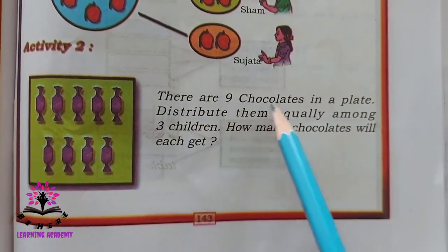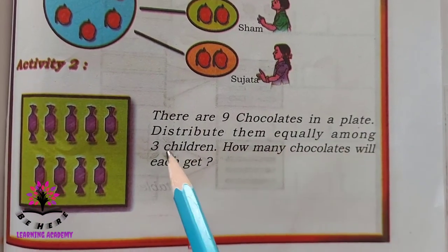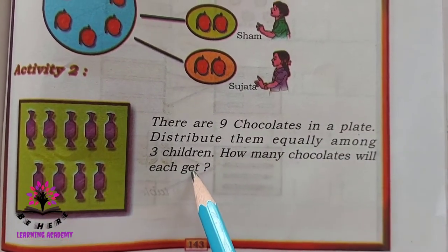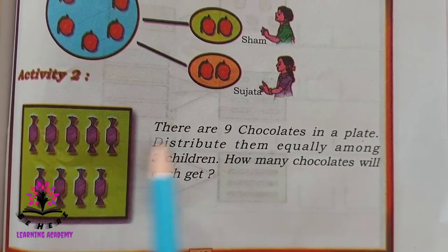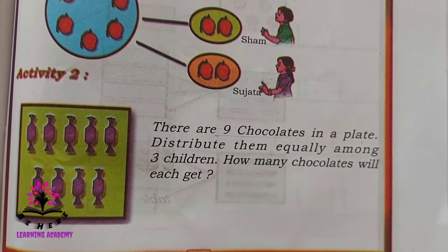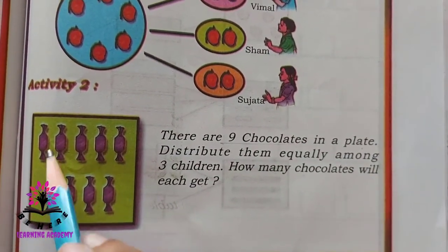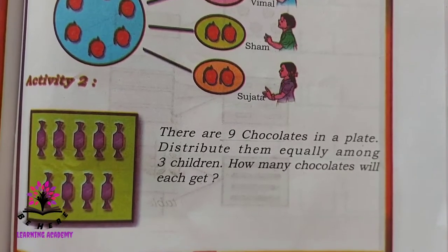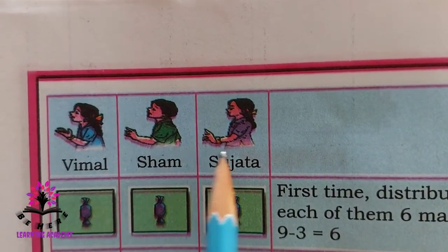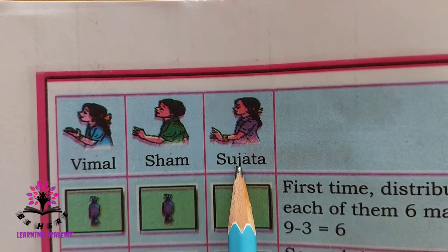There are nine chocolates in a plate. Distribute them equally among three children. How many chocolates will each get? Now you see here there are nine chocolates. You have to distribute them to three children. First you have to give one chocolate each — one to Vimal, one to Shyam, one to Sujata.